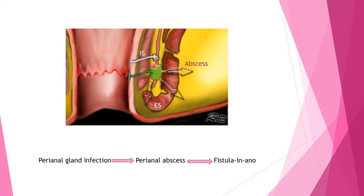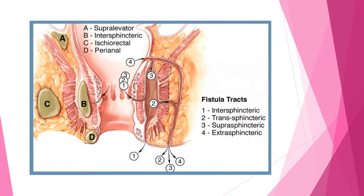This slide shows the role of the perianal abscess in the formation of a perianal fistula. As shown in the last lecture, perianal abscesses begin at the intersphincteric region. The anal gland ducts get blocked, leading to infection and abscess formation. Perianal gland infection due to blockage of ducts leads to perianal abscess, and this abscess, by draining into various parts of the perianal skin, forms a fistula. The various types of fistula created depend on the site of the perianal abscess.